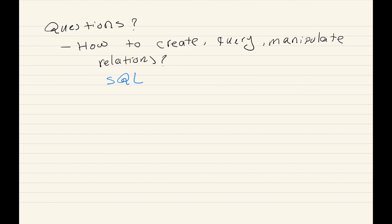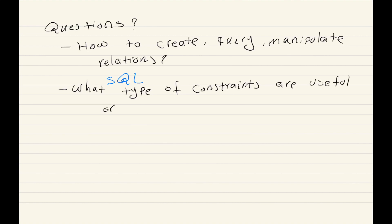Another question is: what type of constraints can we define over these relations? What is meaningful or reasonable? For example, for the relation with name, age, and phone, can you list some constraints over this relation?